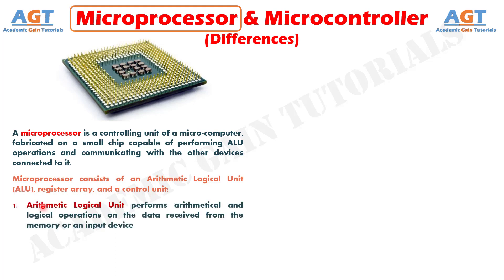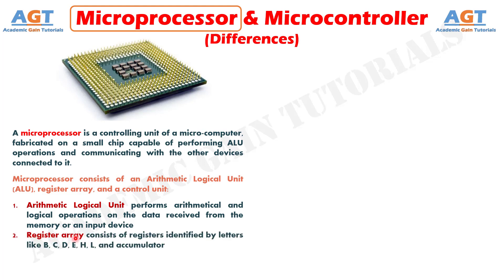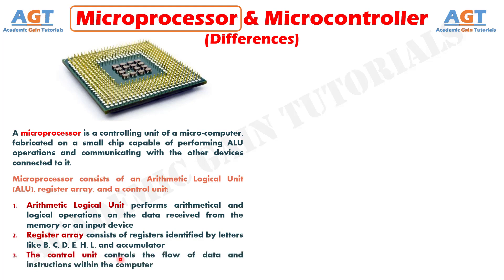The arithmetic logical unit performs arithmetical and logical operations on the data received from the memory or an input device. The register array consists of registers identified by letters like B, C, D, E, H, L, and accumulator. The control unit controls the flow of data and instructions within the computer.